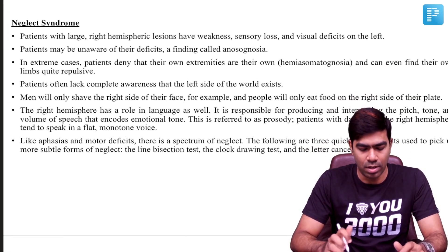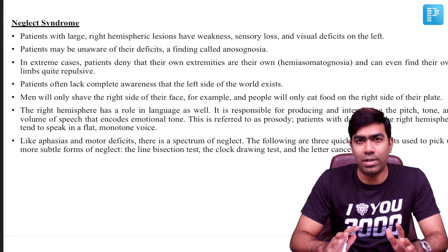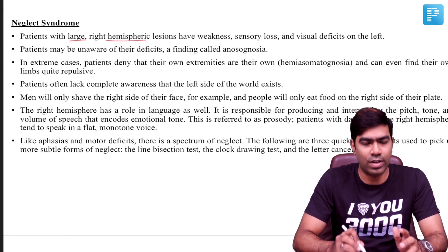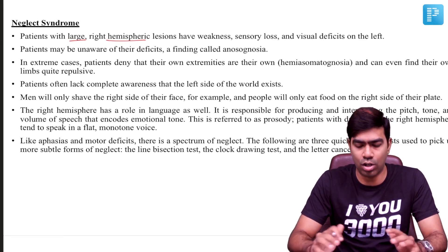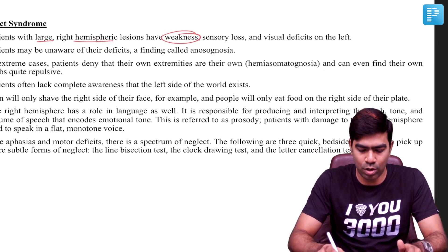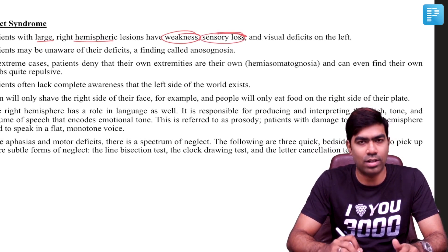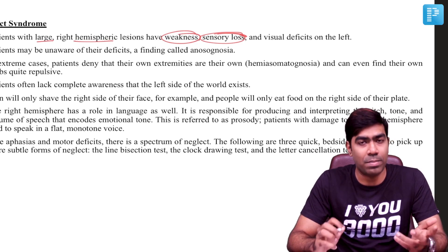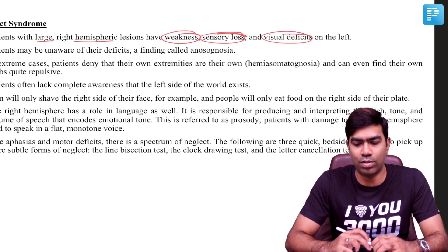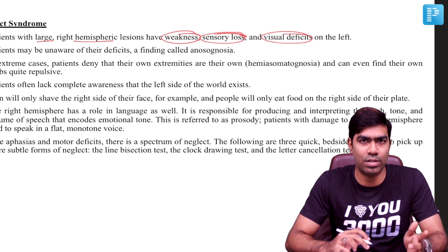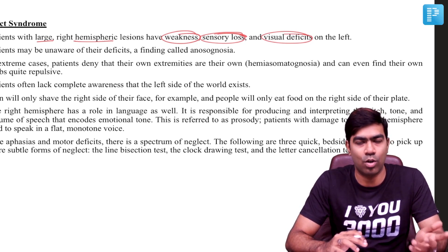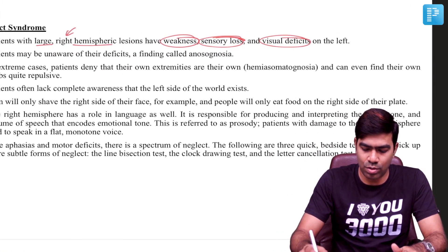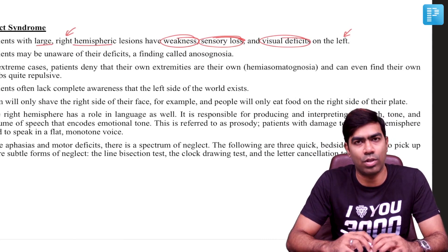Coming to the neglect syndrome, this usually tends to happen in large non-dominant hemispherical lesions, but generally any large hemispherical lesion irrespective of whether it is dominant or non-dominant is going to result in weakness because of involvement of the primary motor cortex. It is going to result in contralateral hemisensory loss because of involvement of the primary somatosensory cortex, and it can result in visual field effects because of involvement of the optic radiation fibers or the occipital cortex itself, which will result in contralateral homonymous hemianopia. If you have a right hemispherical lesion, the deficits are going to be on the left side.